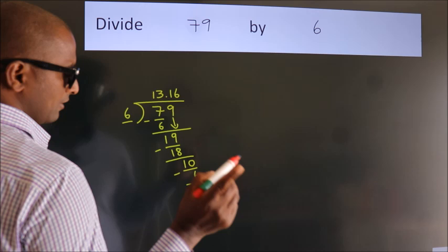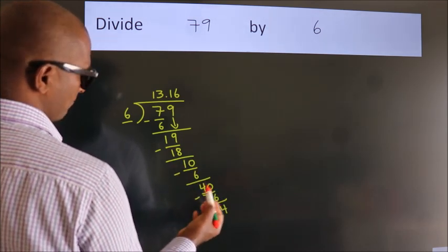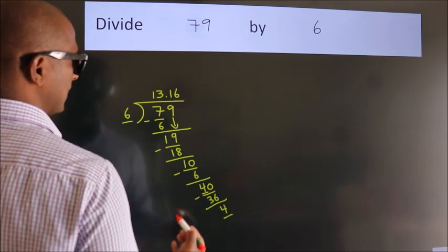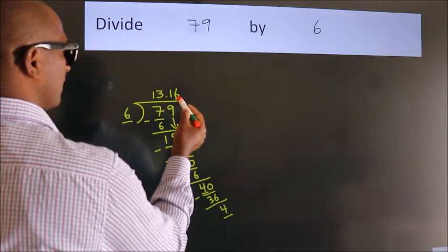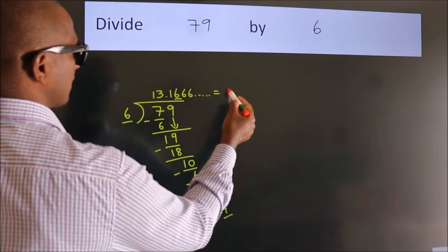Now you observe, we had 4 here and we got 4 again. That means this number keeps on repeating. So this is our quotient.